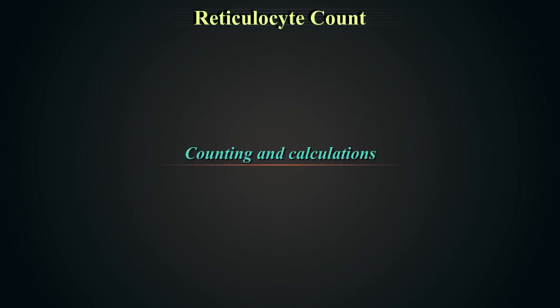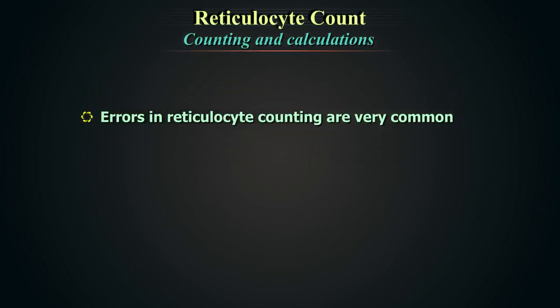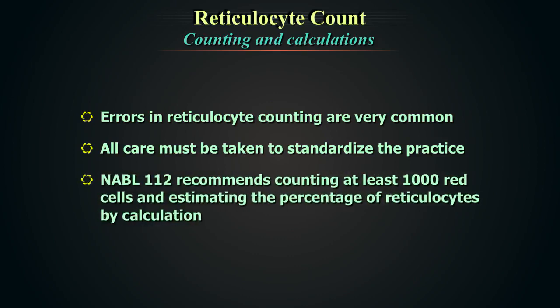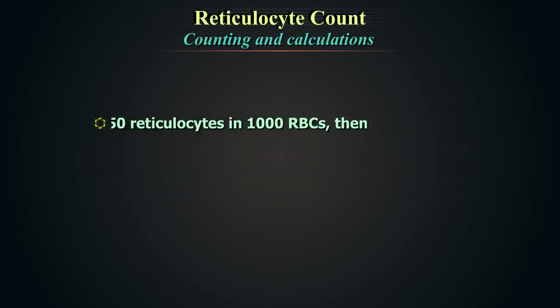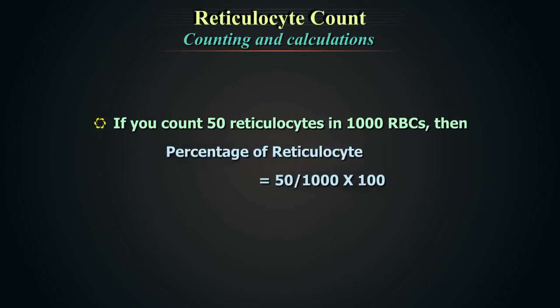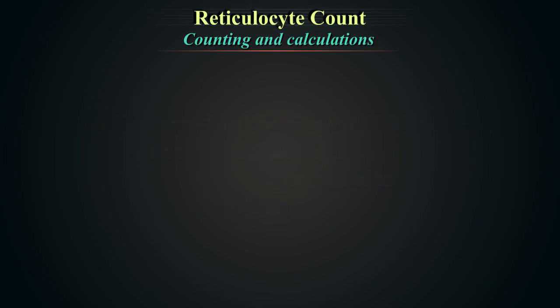Errors in reticulocyte counting are very common, and all care must be taken to standardize the practice. NABL112 recommends counting at least 1000 red cells and estimating the percentage of reticulocytes by calculation. For example, if you count 50 reticulocytes in 1000 red blood cells, the percentage is 50/1000 × 100 = 5%.